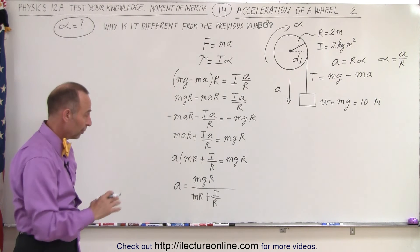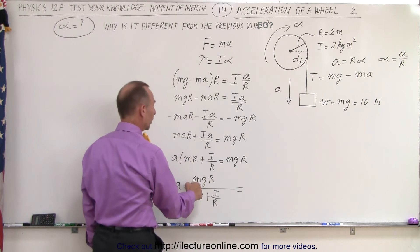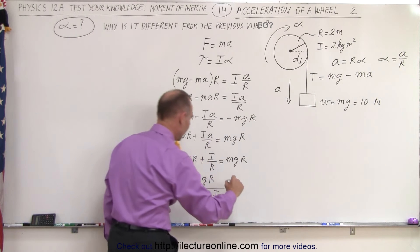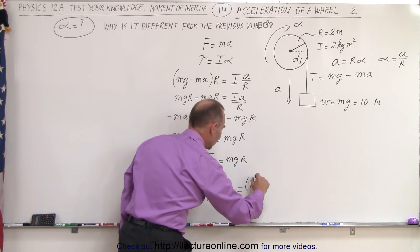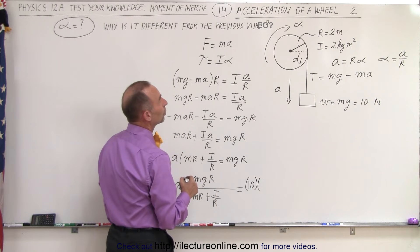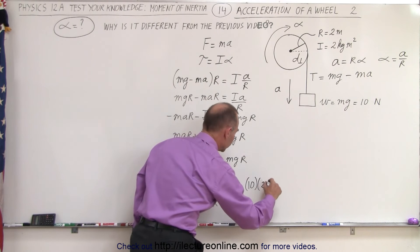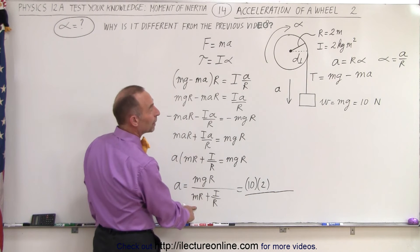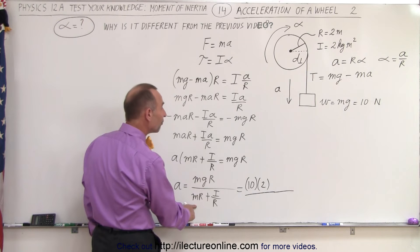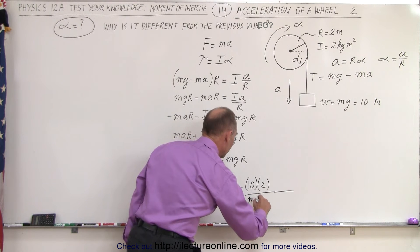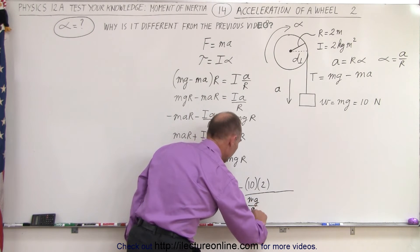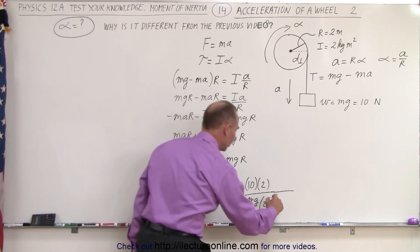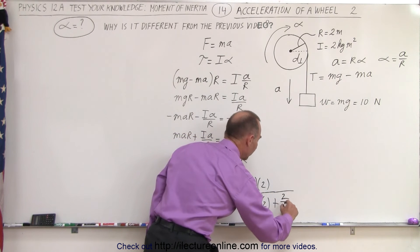Now let's go ahead and plug in all the numbers and see what we get. So the acceleration is equal to the mass times g—well, Mg, that would be equal to 10—the radius, that's going to be equal to 2, all divided by MR. That would be Mg divided by g times R, and R would be 2, so I'll take care of that in just a moment, plus the moment of inertia which is 2 divided by the radius which is 2.